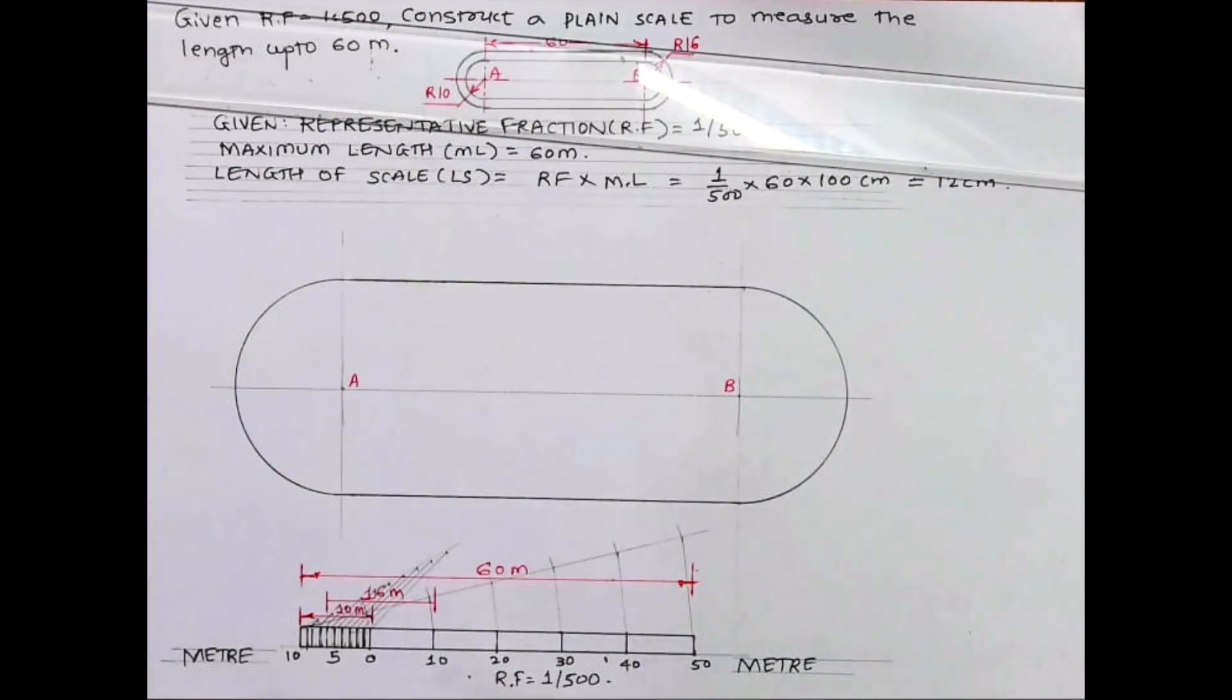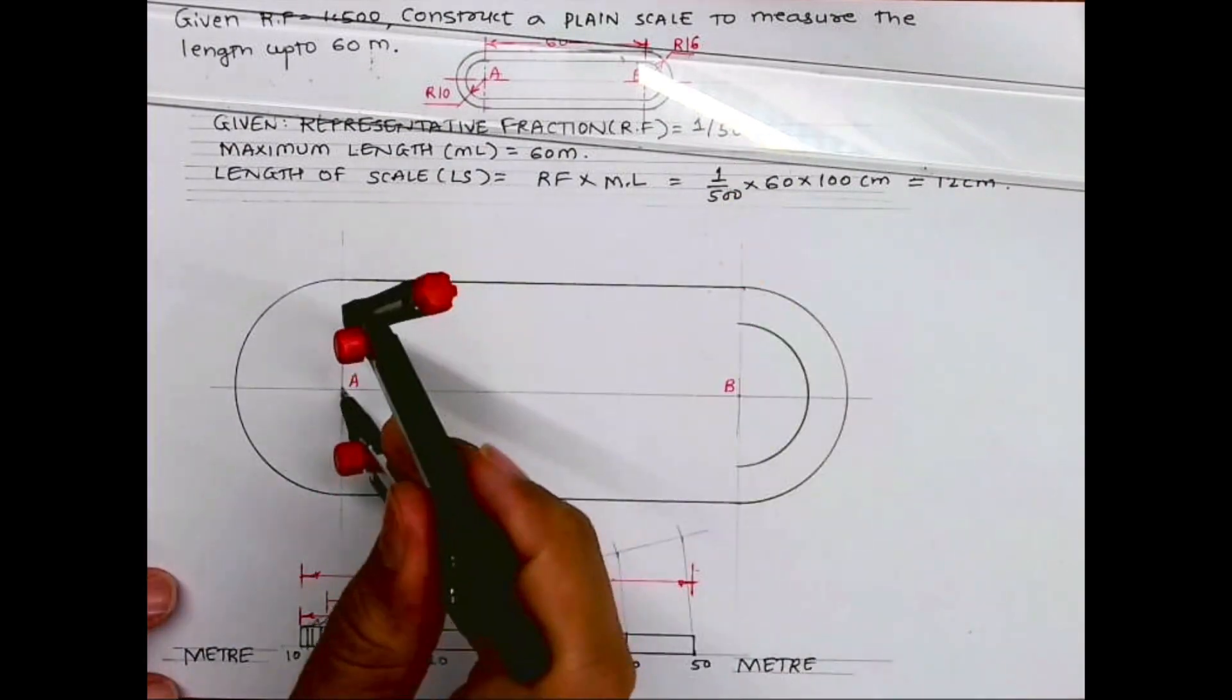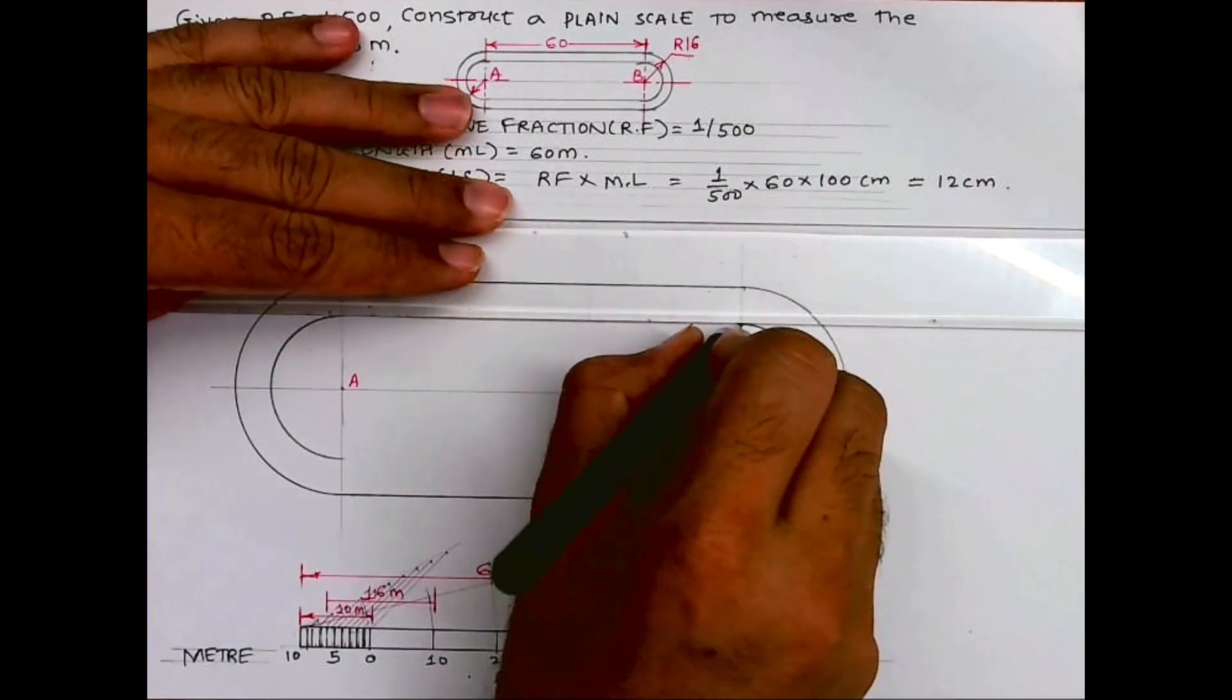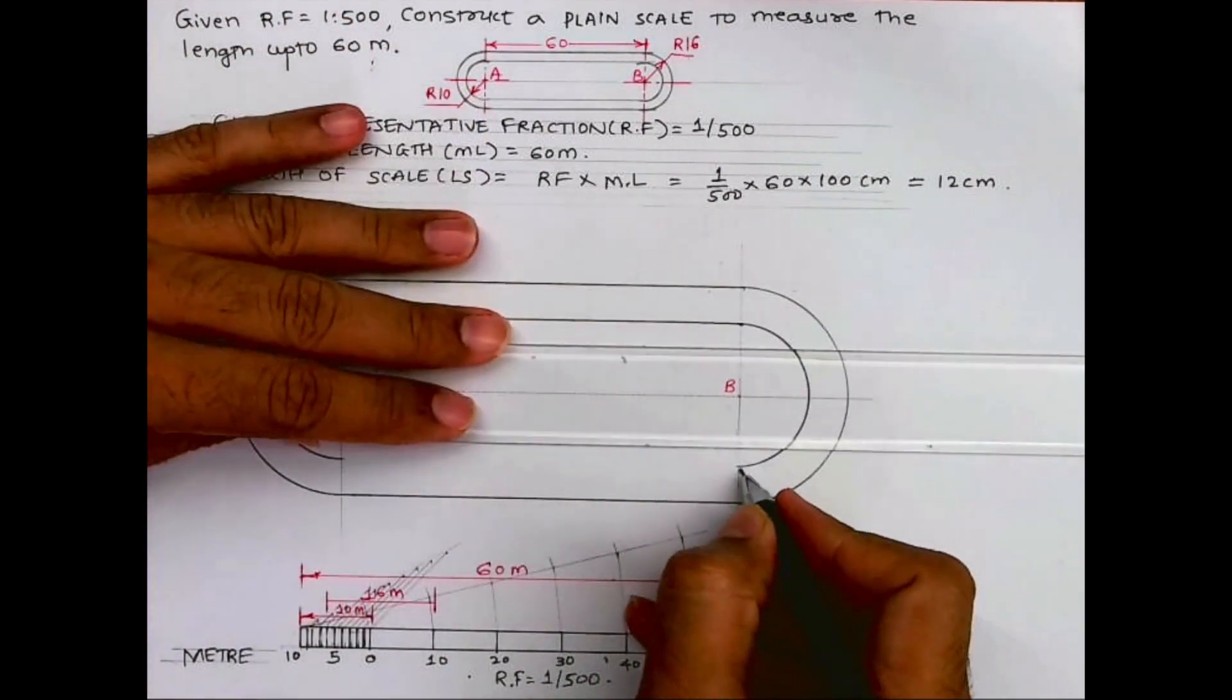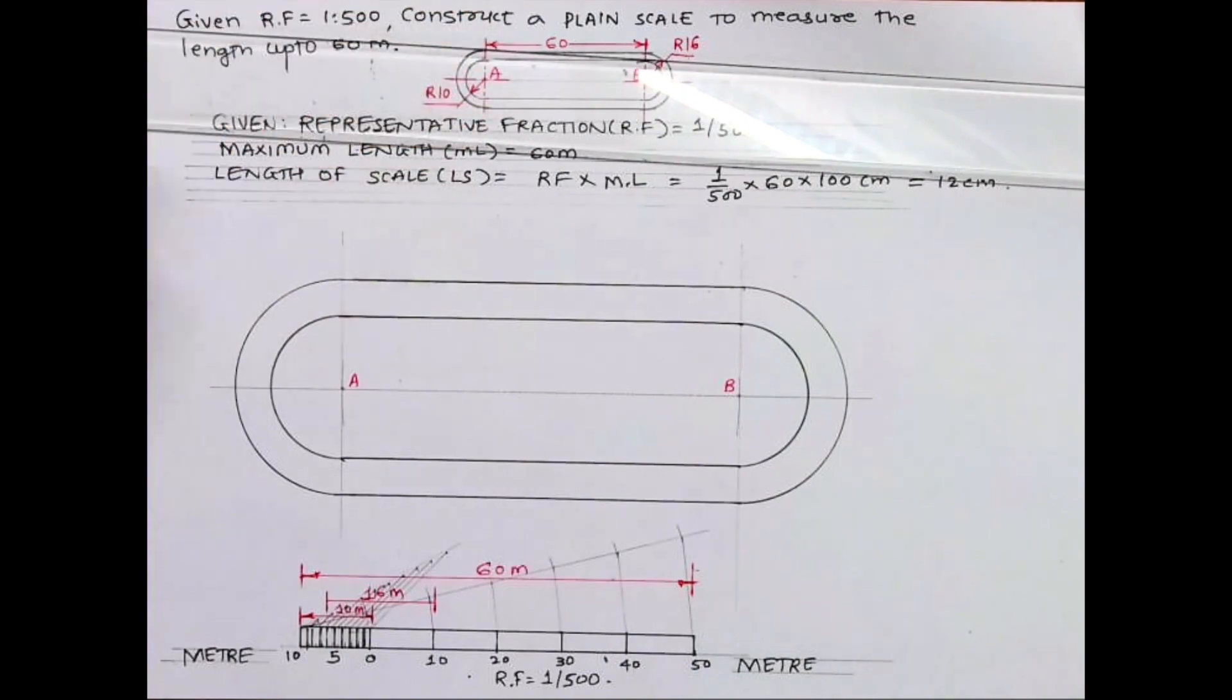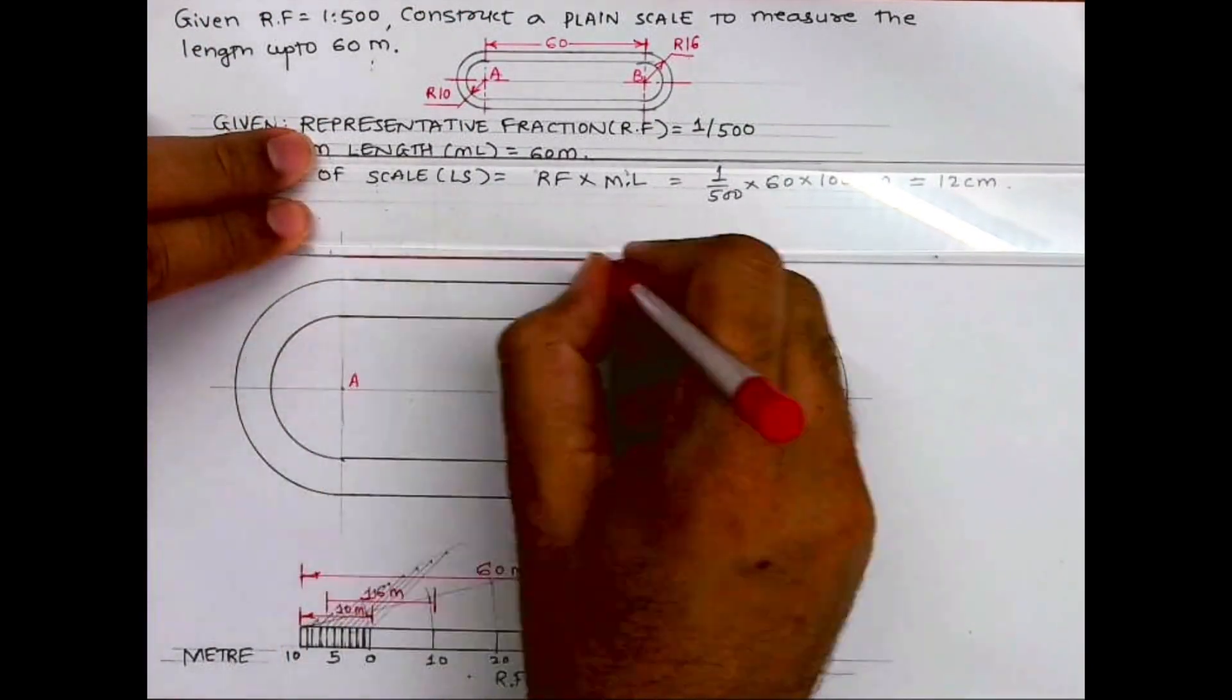We'll draw horizontal lines. Now we have to take radius 10 and then join this. We are done with the problem. We have completed the plain scale as well as the diagram. This was from ICSE technical drawing application paper 2020. Thank you.